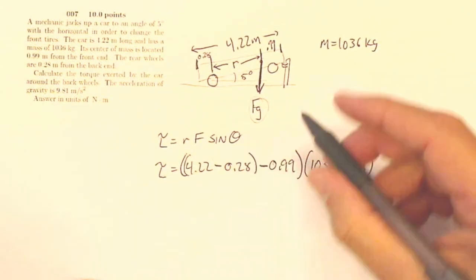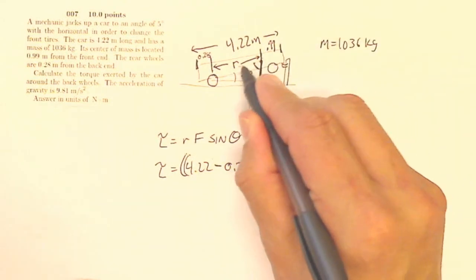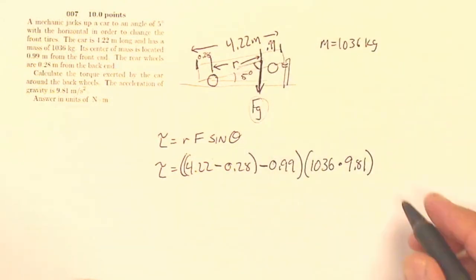And then my theta is going to be this angle here. Now this angle here, if that's 5 degrees, this is going to be the rest of that from 90. So that's going to be the sine of 85 degrees.